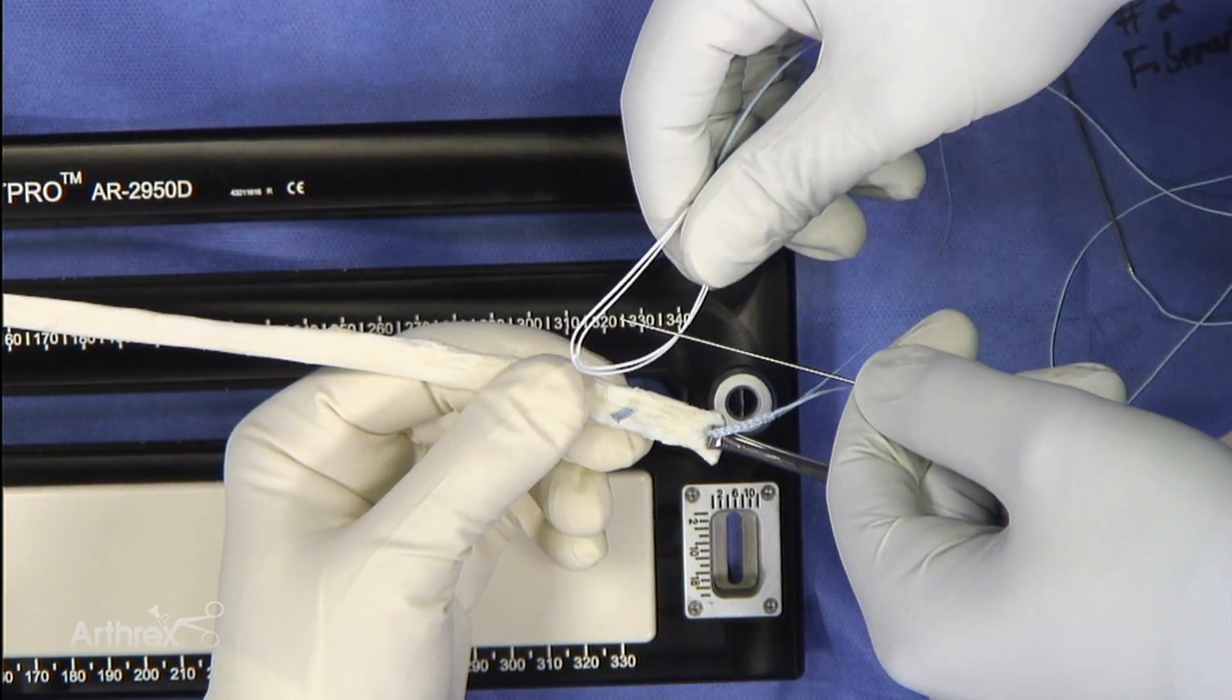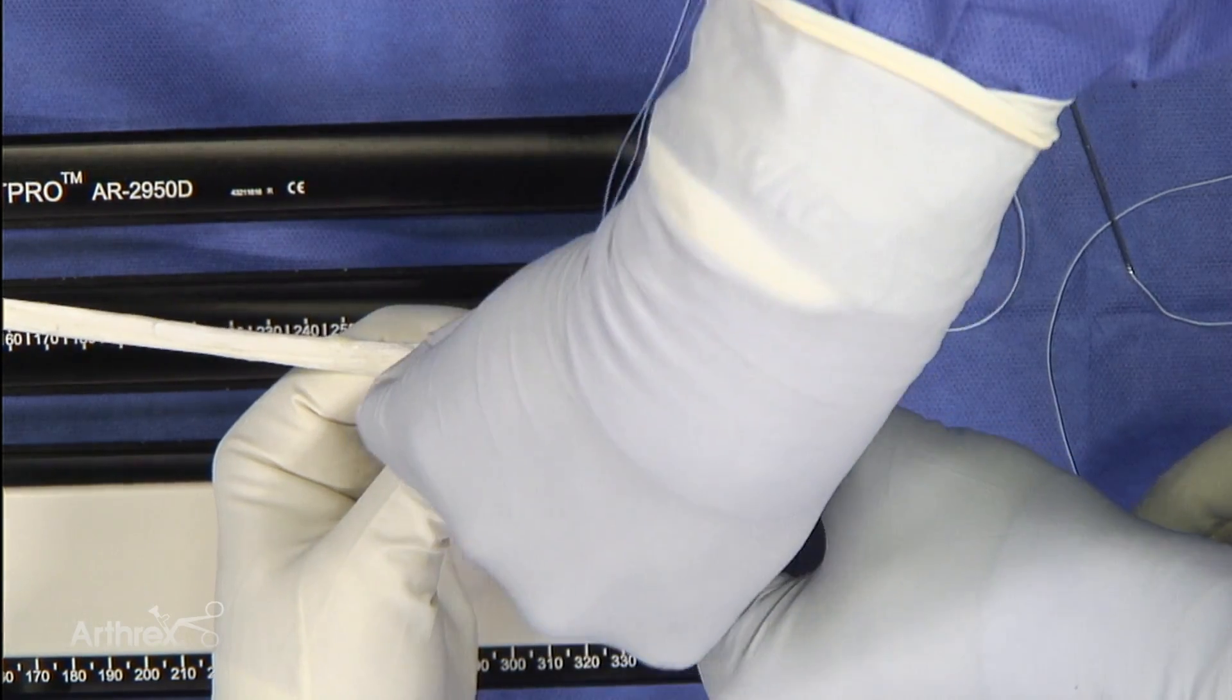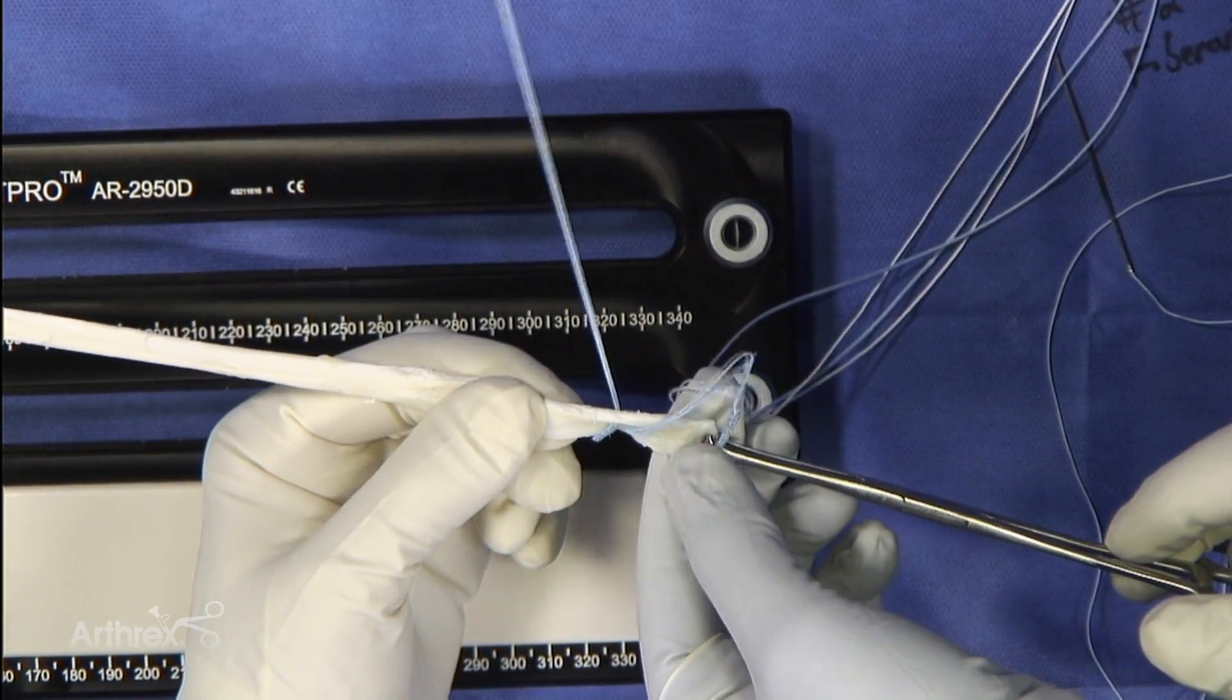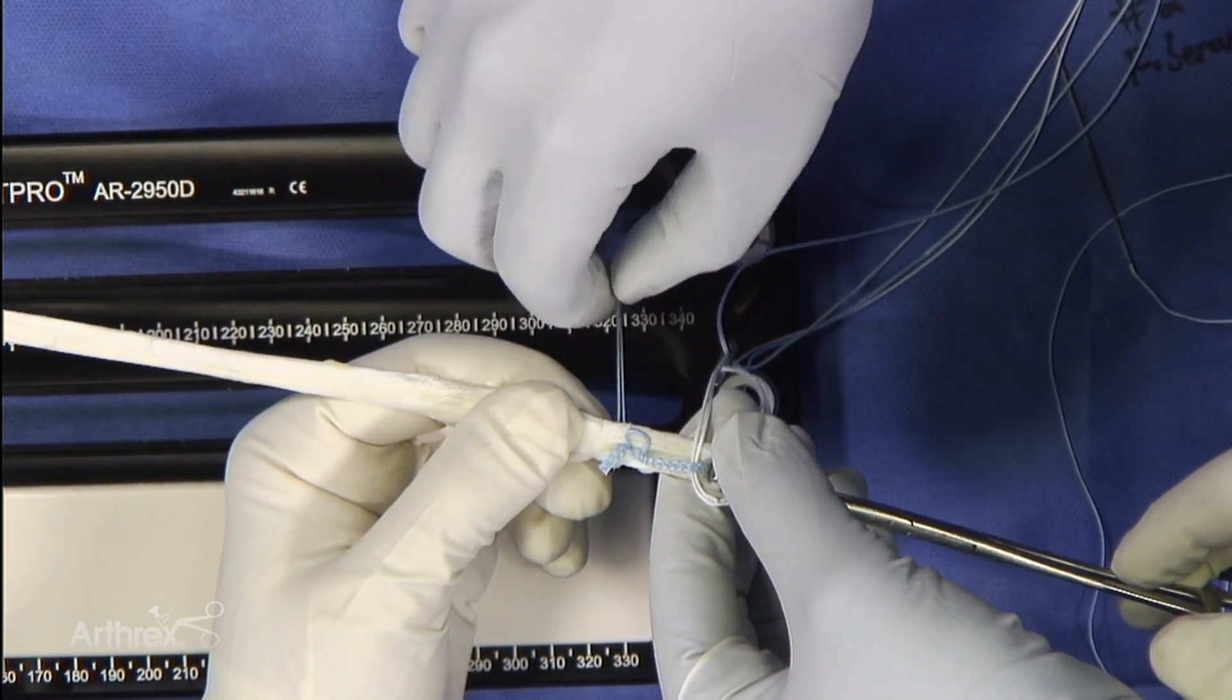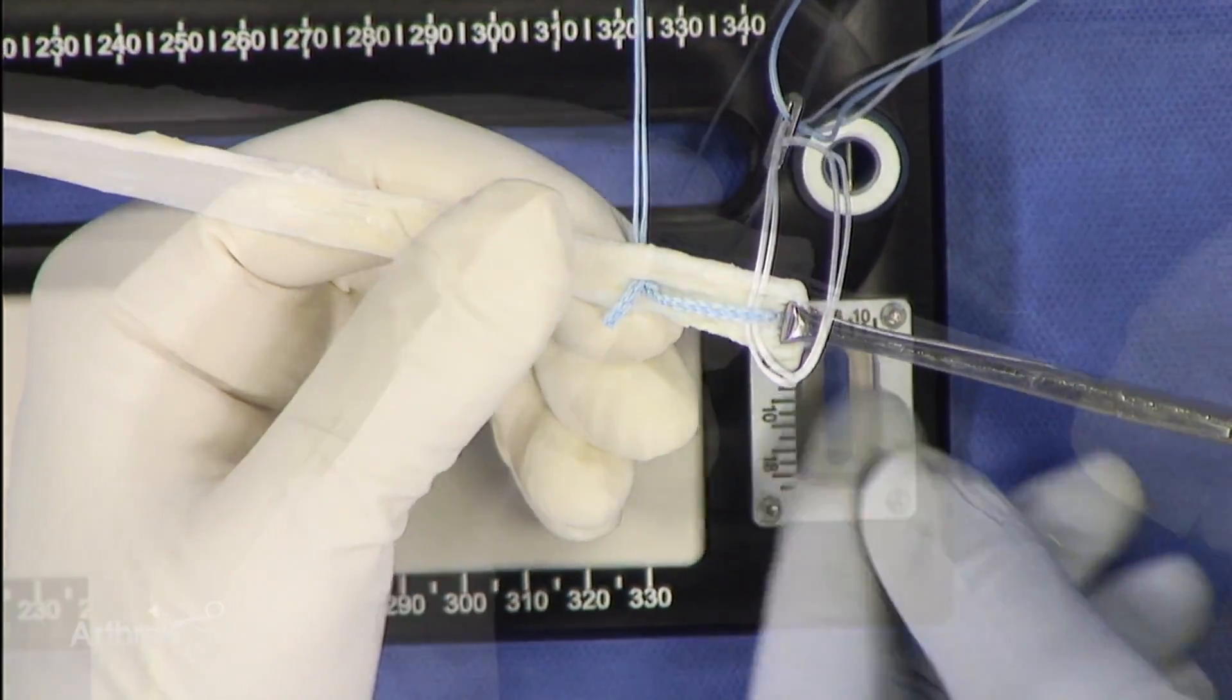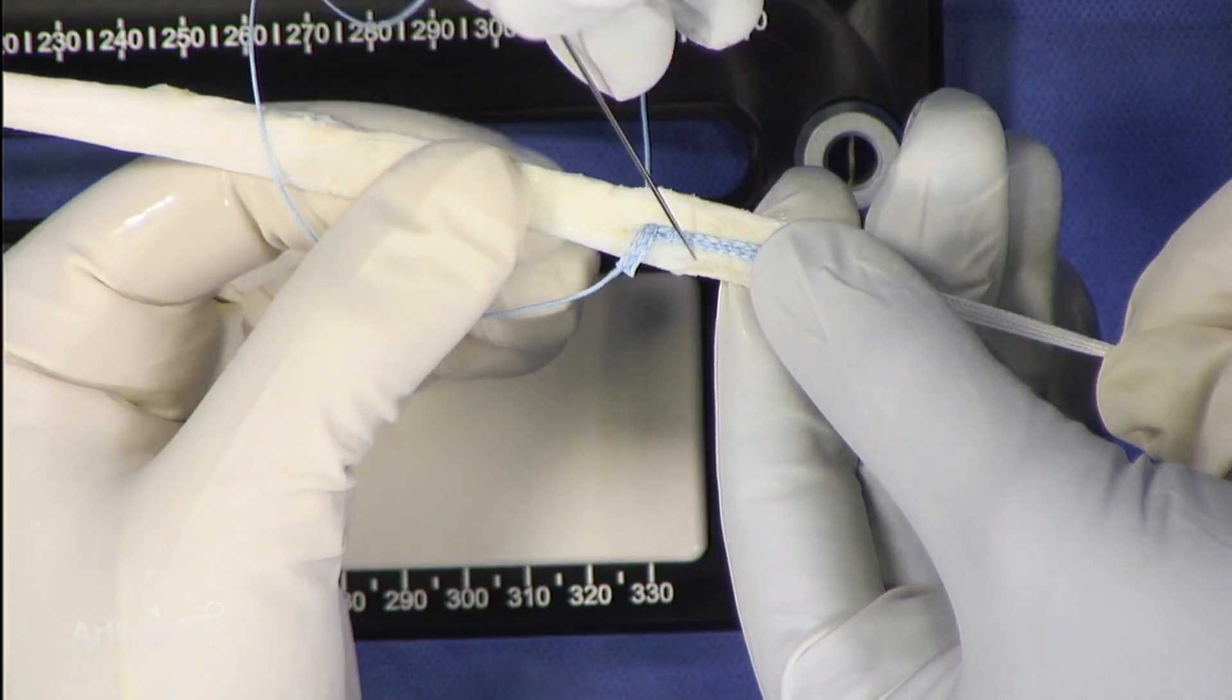Now we're going to loop the fiber tag sutures through the tightrope RT, and we're going to grab both the graft and the actual fiber tag with the needle. That's going to help secure it. And biomechanically, this has been tested to be very strong.